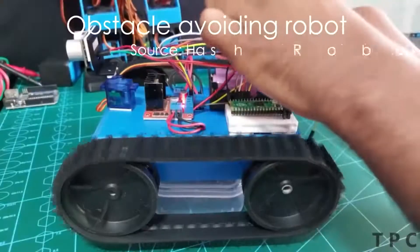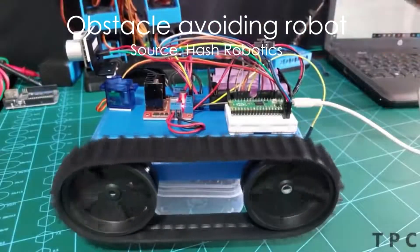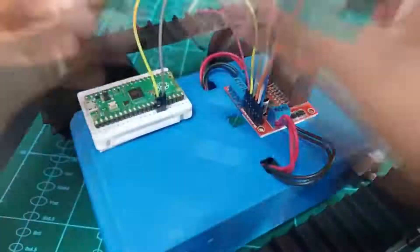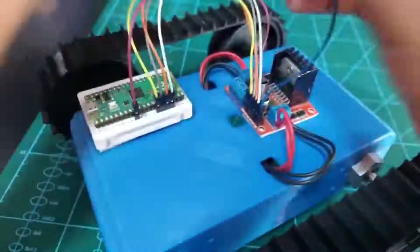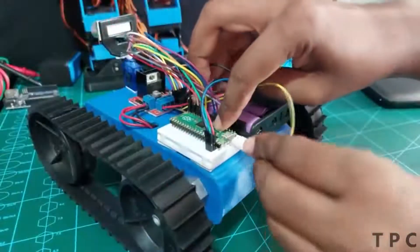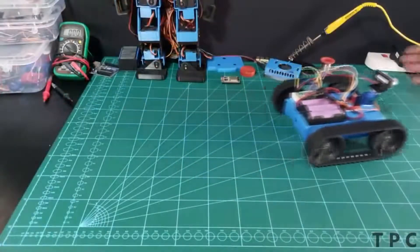This robot senses the obstacles around it using an ultrasonic sensor. So the robot first measures the distance of its nearby surroundings from its current position. After comparing all the values, the robot moves in that direction where the distance is maximum between the sensor and the object.